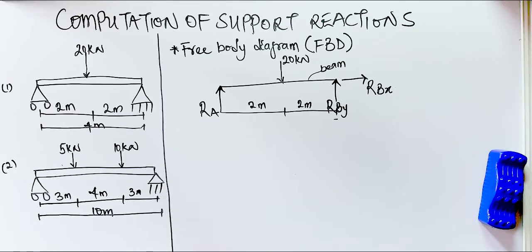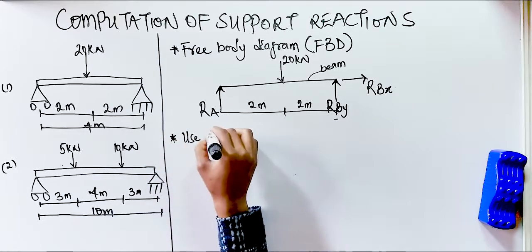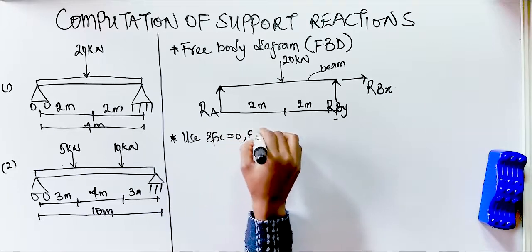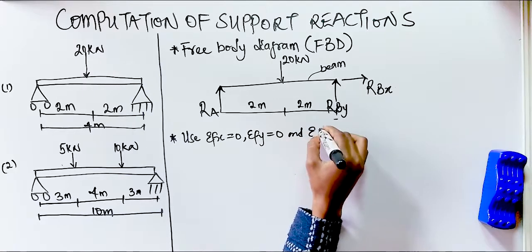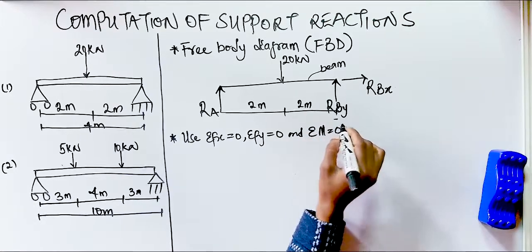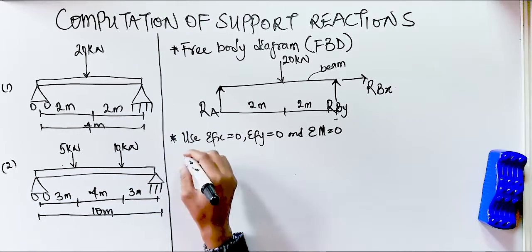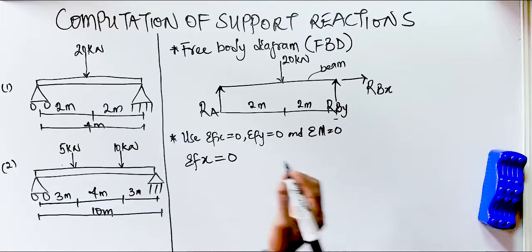After completing the free body diagram, the next step is to use the equations of equilibrium to determine the unknown reactions. We have three equations of equilibrium: summation of Fx must equal zero, summation of Fy must equal zero, and summation of moments must equal zero. We start with summation of Fx, which covers all horizontal forces.